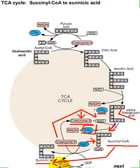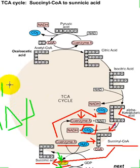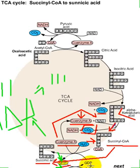In this part of the cycle, GTP is produced. GTP contains 3 phosphates. There is also ADP present, which contains 2 phosphates. GTP will give one of its phosphates to ADP, so ADP becomes ATP with 3 phosphates, and GTP becomes GDP with 2 phosphates. So GTP has 3 phosphates and GDP has 2 phosphates — when GTP donates a phosphate to ADP, ADP becomes ATP and GTP becomes GDP.